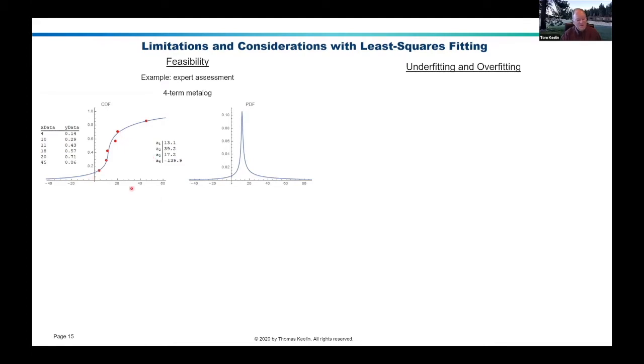If we fit this, just take this data, fit it to a four-term metalog, you get a pretty nice representation of those data points. It doesn't go through all of them. Now, if you only had four data points, it would go through all of them exactly. But if you've got six data points or 100, it'll go through them approximately. You got a nice probability distribution here.